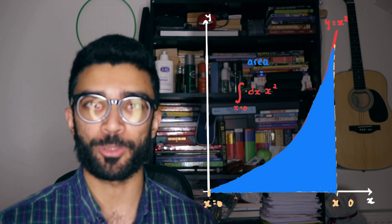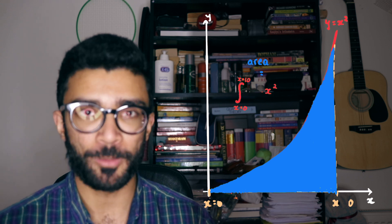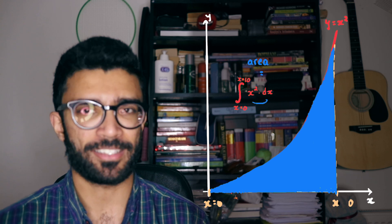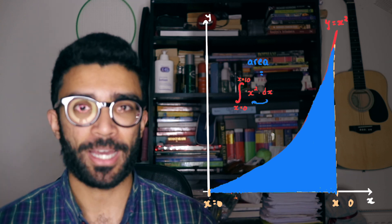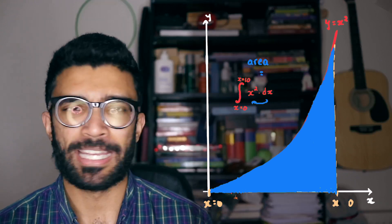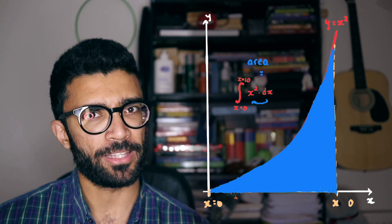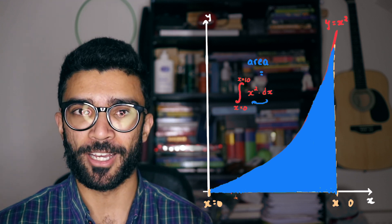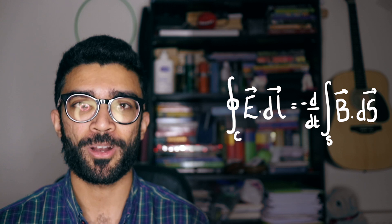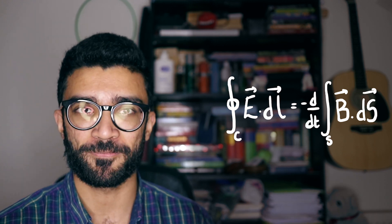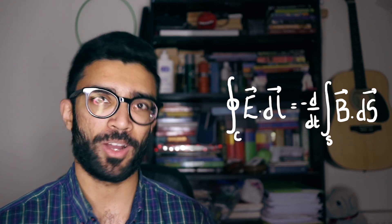The integral sign represents adding up lots of tiny elements to give us a whole thing. I described it visually using area underneath a curve, but it can be used for many different things, including the equation we were looking at earlier. When we apply this train of thought to our equation, we see integral signs on both sides, which means that on both sides we're adding up lots of little things to find something bigger. But what are these little things on each side?